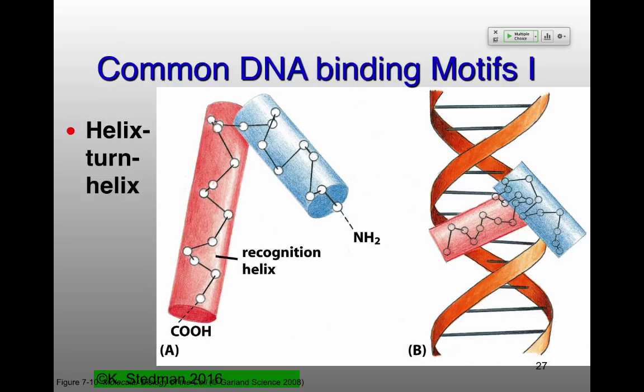Imagine my arm is an alpha helix — it turns out it fits perfectly into the major groove of DNA. One of the major paradigms in thinking about how proteins interact with DNA has to do with alpha helices, and we'll also see two beta sheets sitting in the major groove of DNA. In alpha helices, side chains are sticking out all the way around the outside. In beta sheets, the amino acids are pointing away from the backbone, so it also can interact in a major groove of DNA.